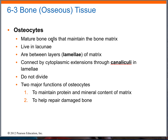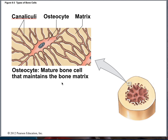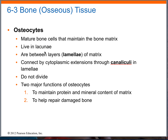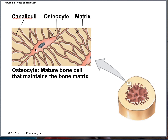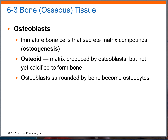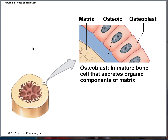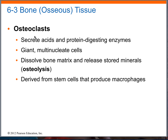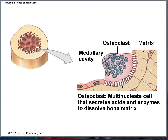So osteocytes get stuck in lacunae. And we have osteoblasts — you guys can take a look at that. And then we have osteoprogenitor or stem cells. And then we have osteoclasts, which are basically macrophages — your white blood cells.